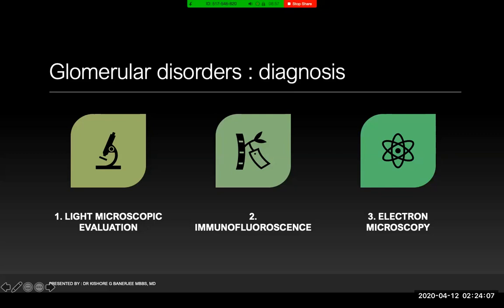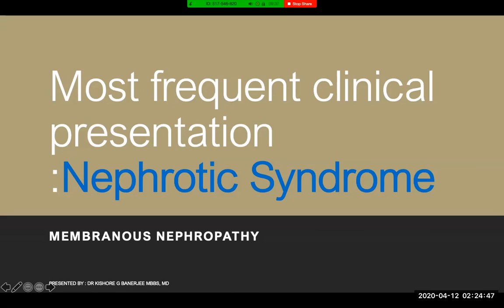For any glomerular disorder, the three-step approach involves light microscopy, followed by immunofluorescence, and often electron microscopy. I want to clarify that many people think electron microscopy is only for research — that is not true at all. Electron microscopy is very much required for the diagnosis of glomerular disorders, and many diagnoses depend on electron microscopic findings. In tertiary setups, electron microscopy is available and is used routinely in renal pathology.